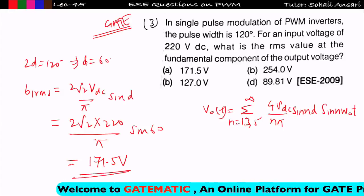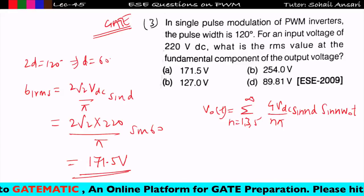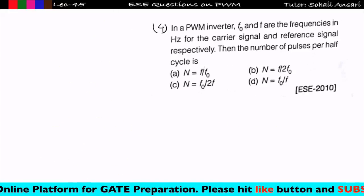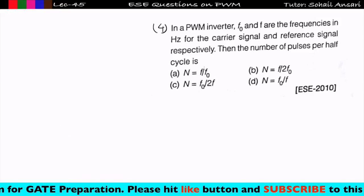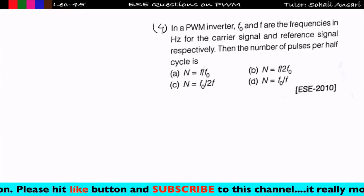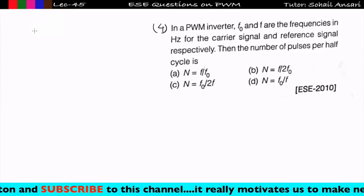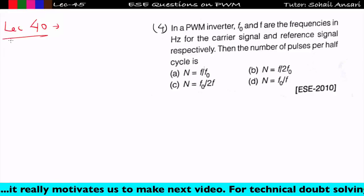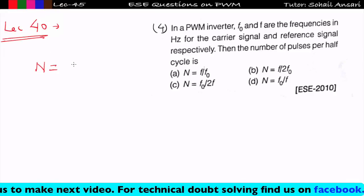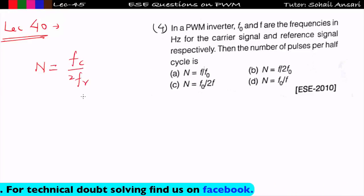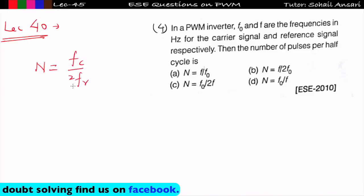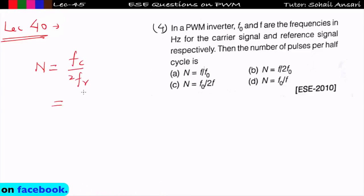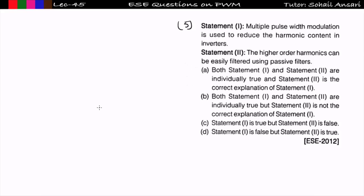This was asked in ESE 2009. Next problem: in a PWM inverter, f₀ and f are the frequencies of the carrier signal and reference signal respectively. The number of pulses per half cycle equals fc / (2fr). Here it is written as f / (2f₀), so option B is correct. Refer to lecture number 40 where this derivation was done.